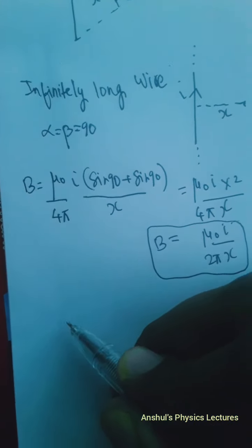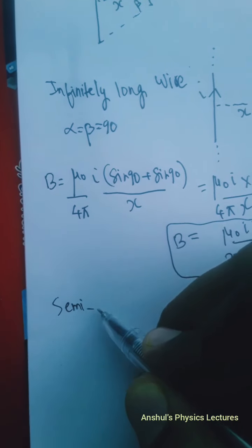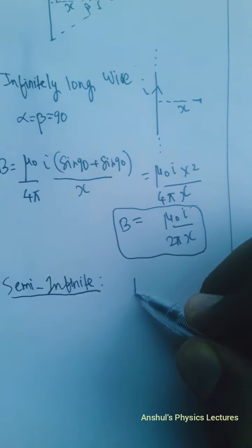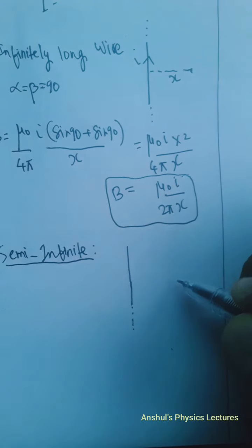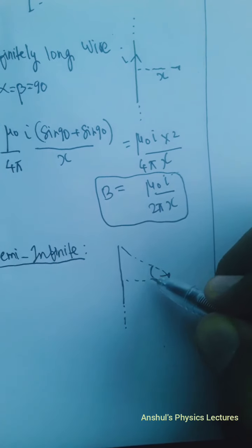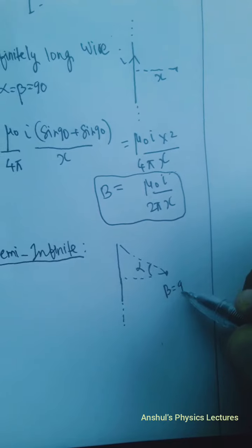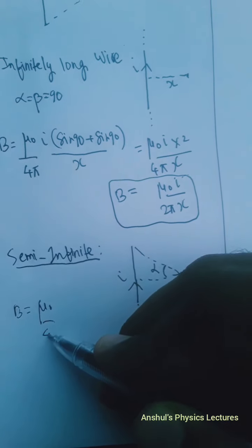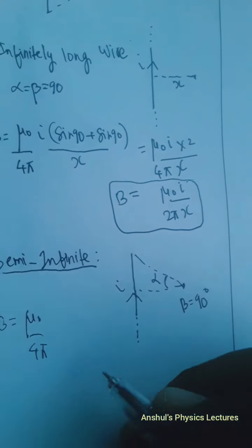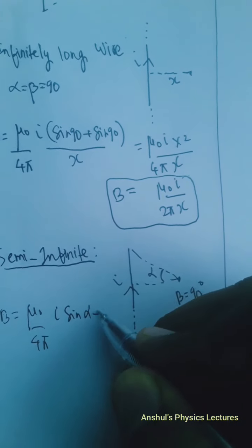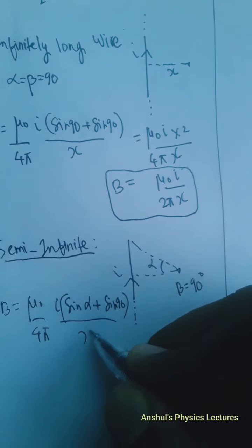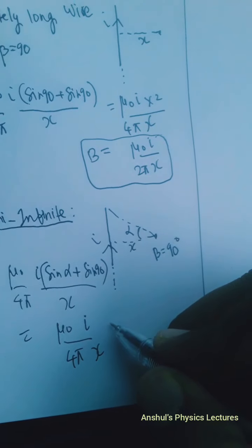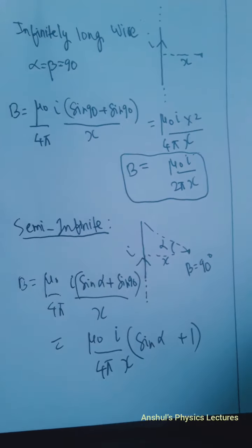Next is the semi-infinite wire case. For a semi-infinite wire, one angle is alpha and the other angle becomes 90 degrees. So the magnetic field formula becomes: B = (μ₀/4π) × i × (sin α + sin 90) / x = (μ₀i / 4πx) × (sin α + 1).